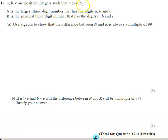None of them are the same because they are strict inequalities. Now, we're told N is the largest number and it's got the digits a, b, and c. K is the smallest number which has got a, b, c, and they're both three-digit numbers.